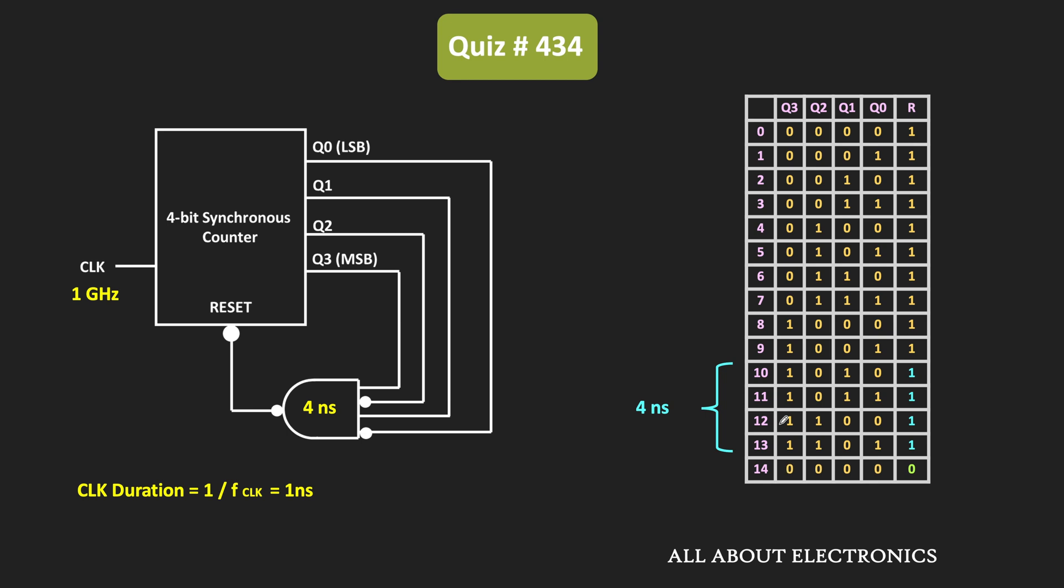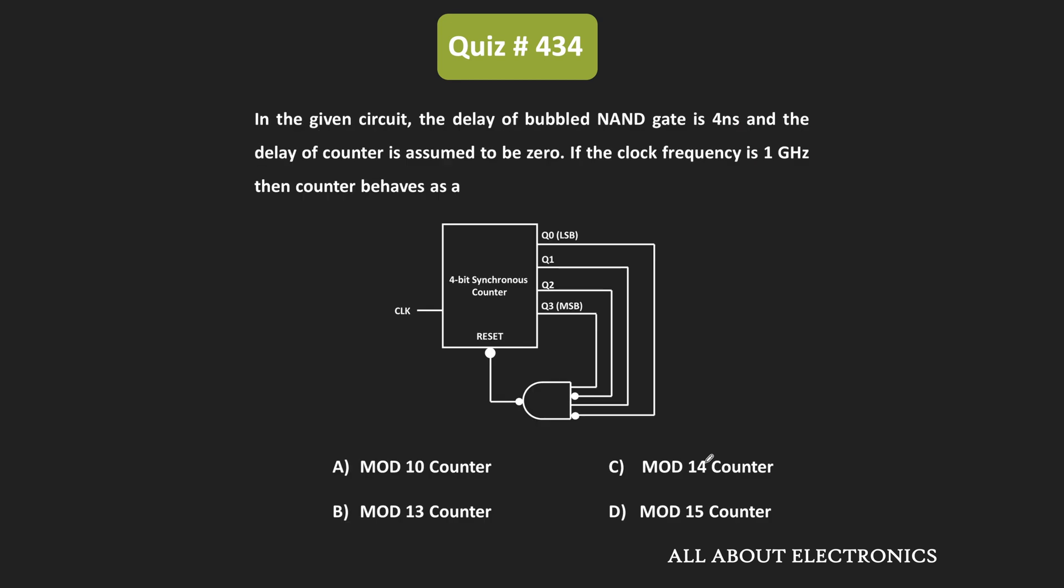So if you see the overall counting sequence, then here, the counter is counting from 0000 to 1101. That means we can say that the modulus of the counter is equal to 14. That means the given counter is the mod 14 counter. And therefore, for the given question, this is the correct answer.